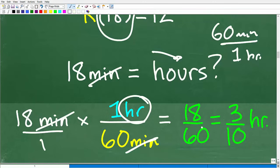All right, so we end up with 18 over 60, this lovely fraction. Of course, 6 goes into 18, 3 and 6 goes into 60, 10. So 18 minutes is three-tenths of an hour.